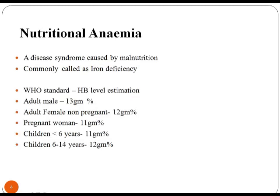Nutritional Anemia. A disease syndrome caused by malnutrition, commonly called iron deficiency. According to the World Health Organization, hemoglobin level estimations are: adult male 13 grams, adult female non-pregnant 12 grams, pregnant women 11 grams, children less than 6 years 11 grams, and children between 6 to 14 years 12 grams.